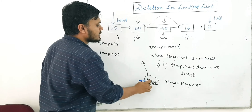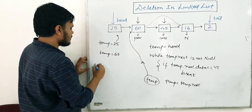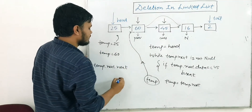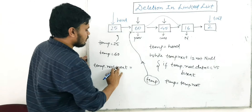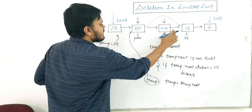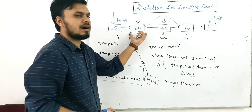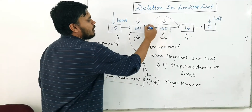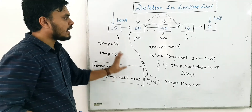Now that we have the previous item in temp, we simply write: temp.next = temp.next.next. This makes the previous node's pointer skip over the 45 node and point directly to the node after it, effectively removing 45 from the list. That's the main deletion line of code. I hope this entire logic is clear.